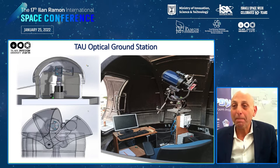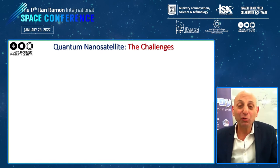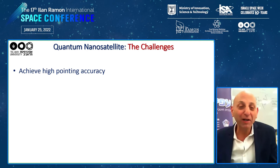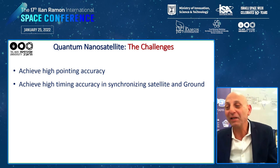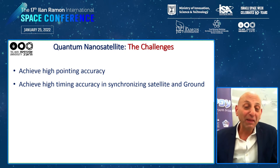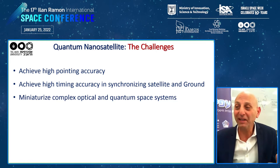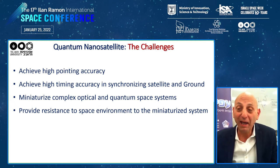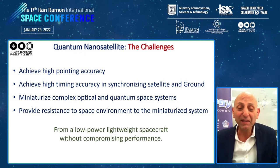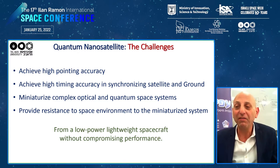The major hurdles to overcome are: first, the extremely high pointing accuracy required to minimize the link loss over hundreds of kilometers, as well as achieving high timing accuracy in synchronizing between the satellite and the ground station. Another problem is the need to physically minimize the complex optical and quantum systems while providing resistance to the space environment. And to achieve all this while obtaining a link margin that enables the transfer of an identifiable quantum signal above the noise level.